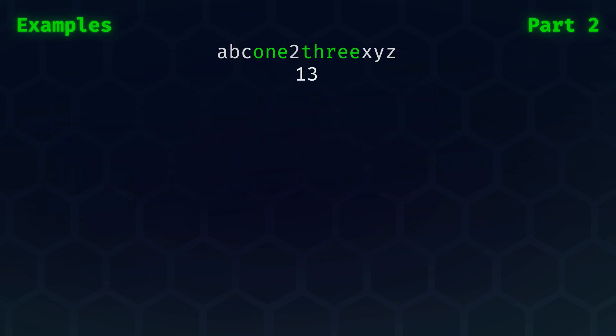In this first example, we find that the leftmost number that we see first is 1, and the rightmost number is 3. Both are fully spelled out, and the expected calibration value here is 13. In this second example, we have a combination of a spelled-out digit and an actual digit. Together, they form 14.